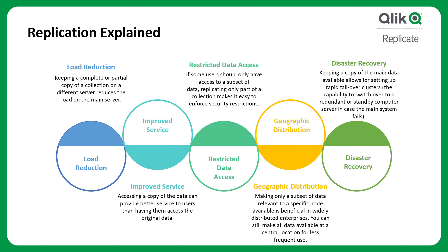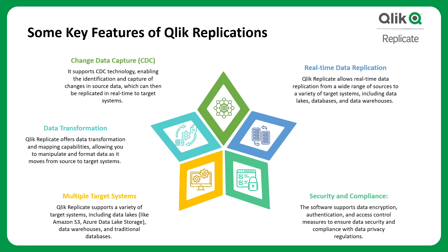Restricted data access means if some users should only have access to a subset of data, replication can limit access to just that subset. Geographic distribution means you can make copies of all data available at a central location for less frequent uses. Disaster recovery means keeping a copy of the main data available allows for rapidly setting up failover clusters — making multiple copies of data stored at different locations so you can recover in case of system, software, or hardware failure.